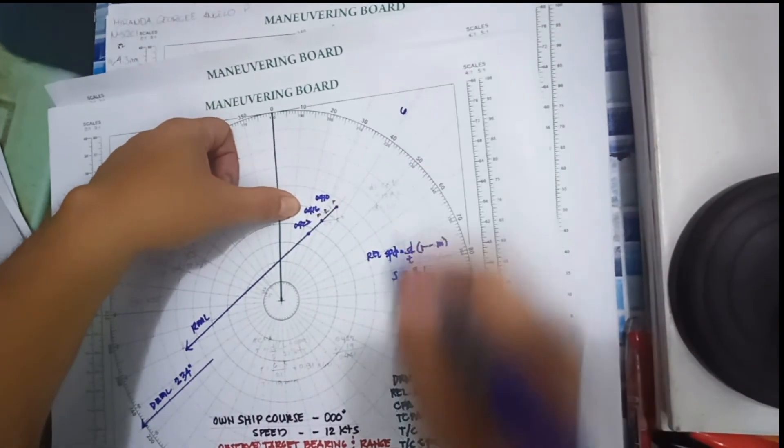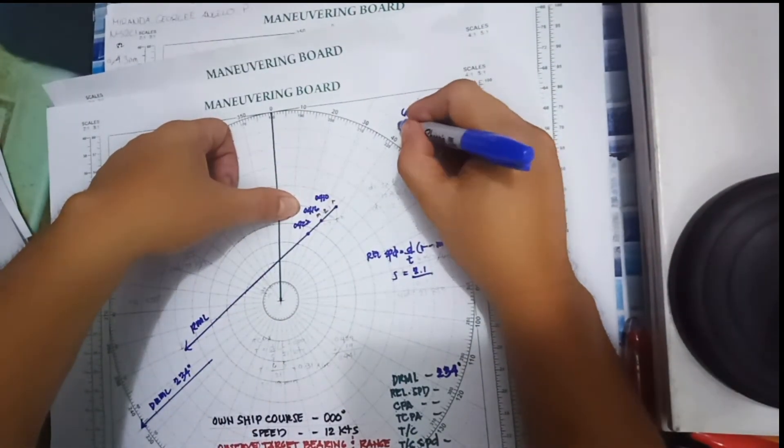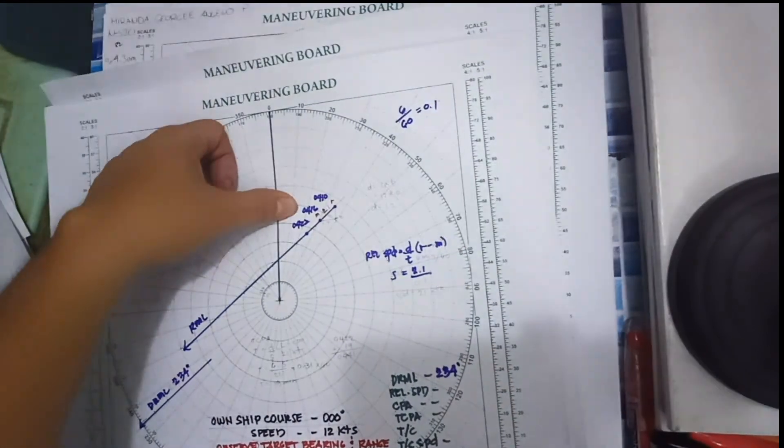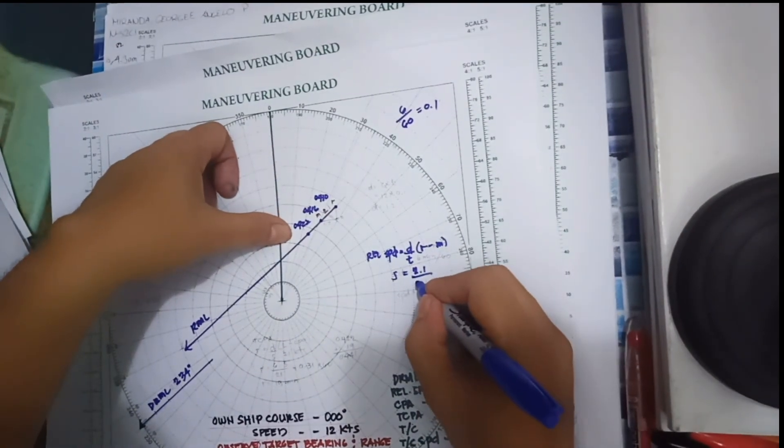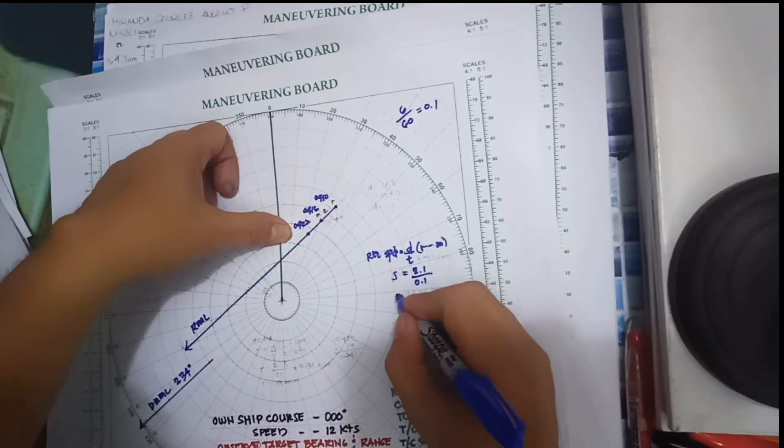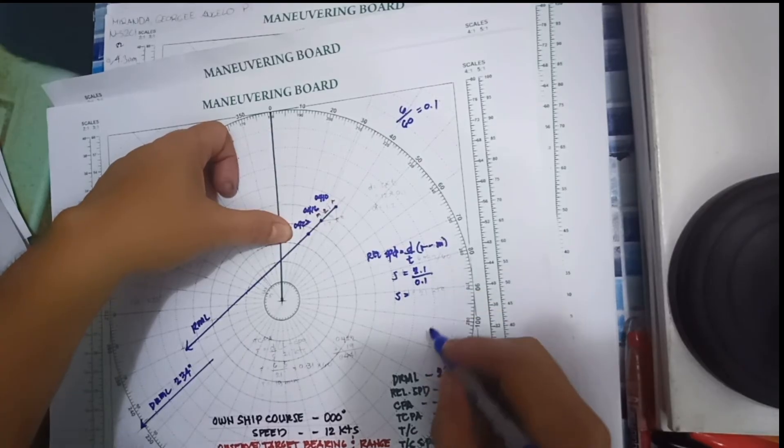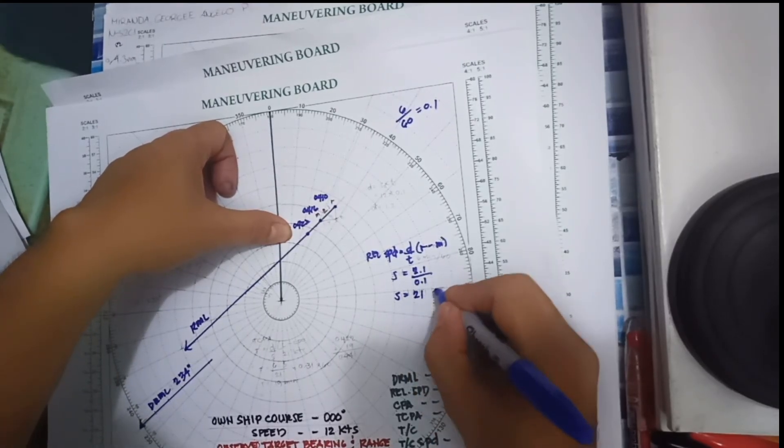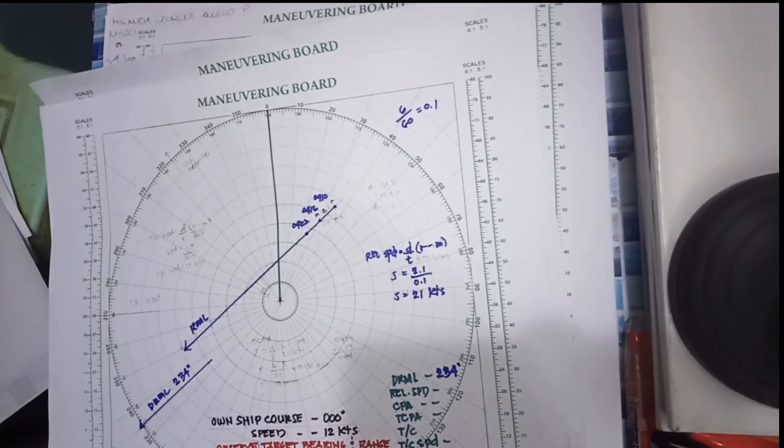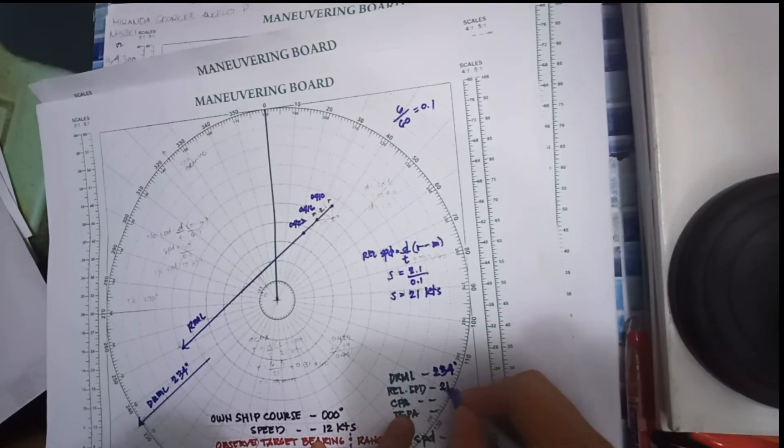The interval of time from 0410 to 0416 is 6 minutes, divided by 60, so the time is 0.1. So 2.1 divided by 0.1 is 21 knots. We have now the relative speed of 21 knots.